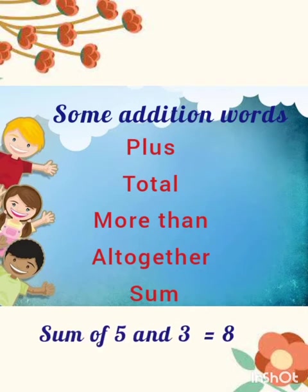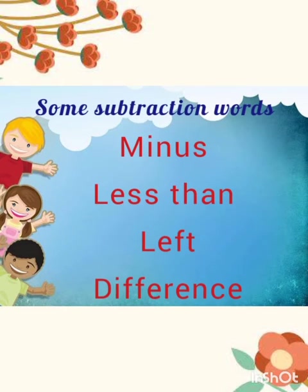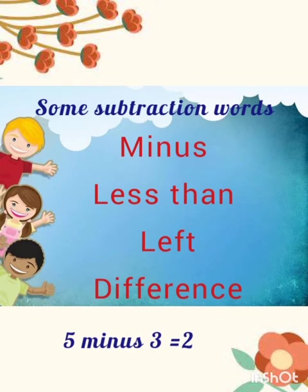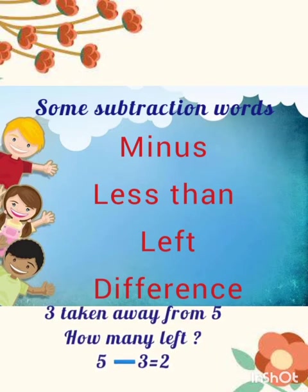And the sum of 5 and 3 is also 8. Some subtraction words are: minus, less than, left, and difference. For example, 5 minus 3 is 2. 3 less than 5 is also 2. 3 taken away from 5 — how many are left? 2.